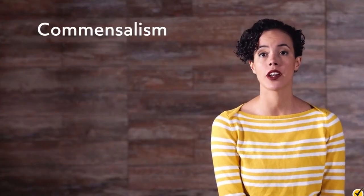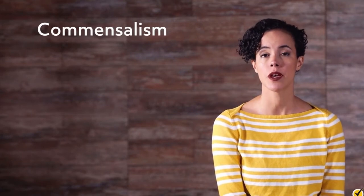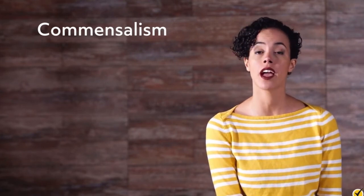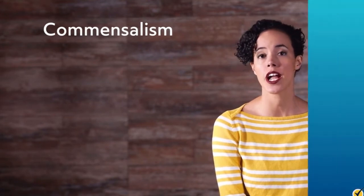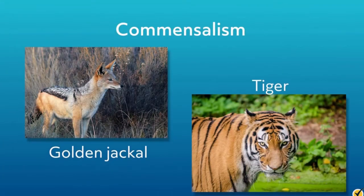Commensalism is another type of symbiotic relationship where one organism benefits and the other organism isn't benefited or harmed either way. Golden jackals will follow tigers on their hunt for prey so that they can feed off of the tiger's scraps. The tiger does all of the work to catch and kill its prey, but it doesn't seem to mind the jackal cleaning up after it. Since the jackal benefits and the tiger isn't affected, this is an example of commensalism.